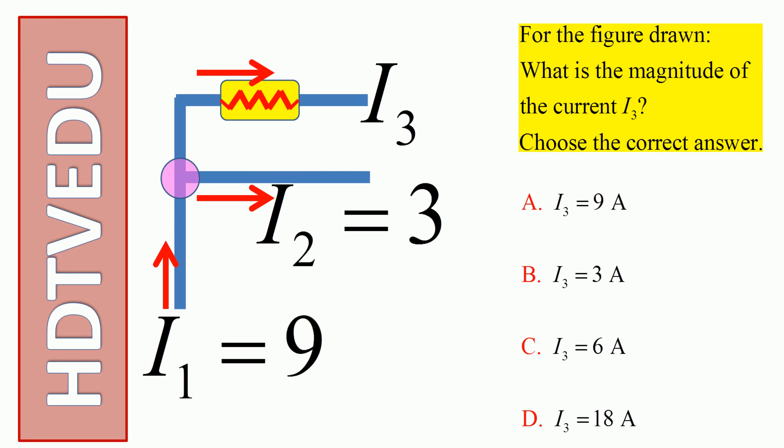Let's do this problem. We see 9 entering, we see 3 leaving, so what is I3? Current entering is I1, and current leaving is I3 and I2. We have 9 equals 3 plus I3. Current entering is 9, current leaving is 3 and I3.